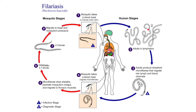The adults in the lymphatics — both male and female — mate. Adults produce sheathed microfilariae that migrate into the lymph and blood channels. So from the lymphatics, they move into our blood circulation. That is why the infective stage of filarial worms in mosquitoes is the microfilariae — because microfilariae circulate inside our body, specifically in the lymph and blood channels.